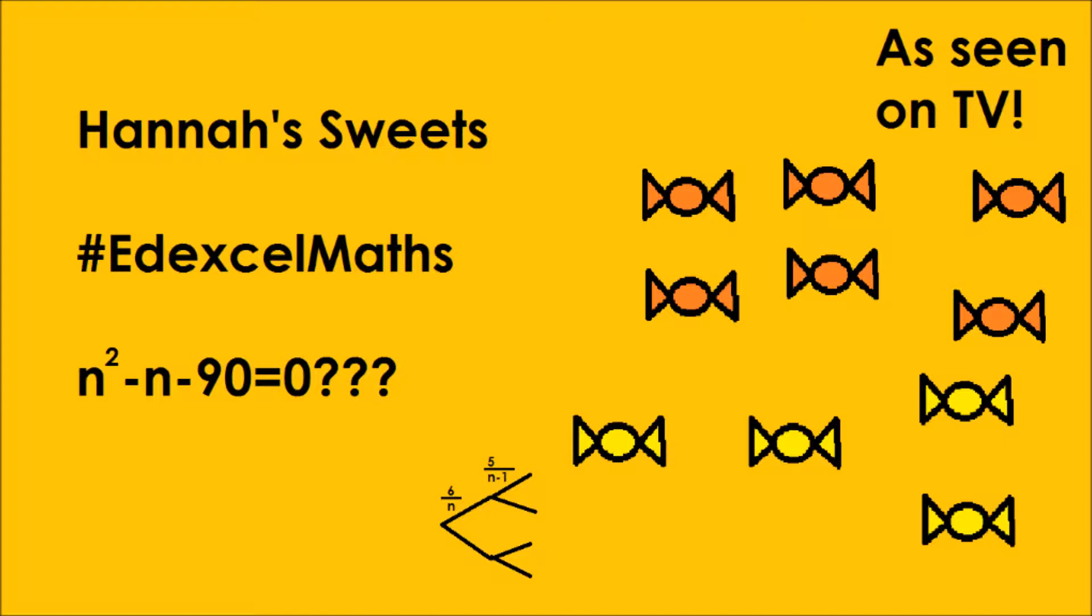So therefore, the chance of the second one being orange, it's a simple division, five over n minus one. Now you can multiply all the way along the branch of the tree diagram. You'll get six over n multiplied by five over n minus one, and that will simplify down to 30 over n squared minus n.